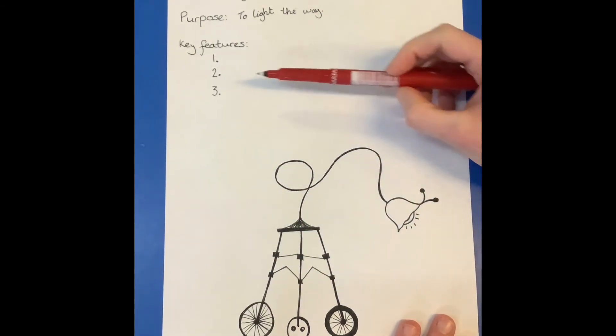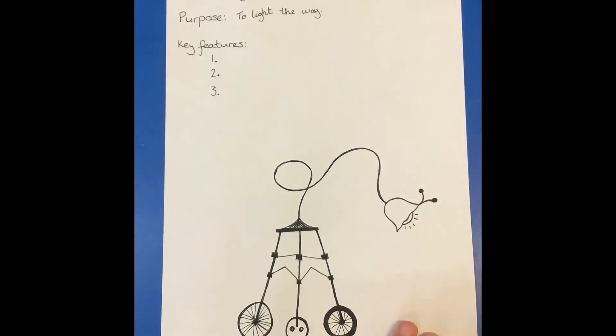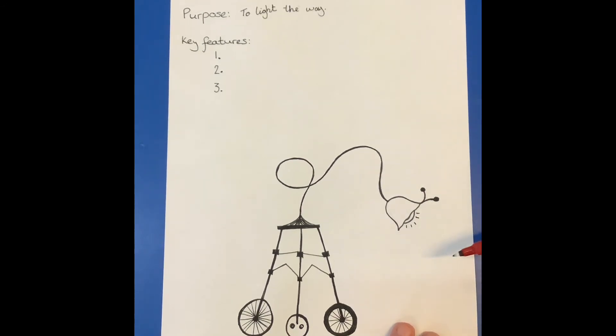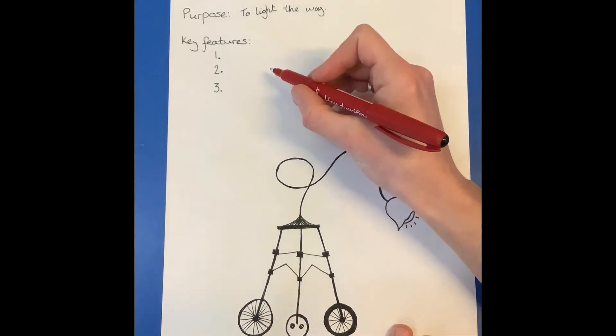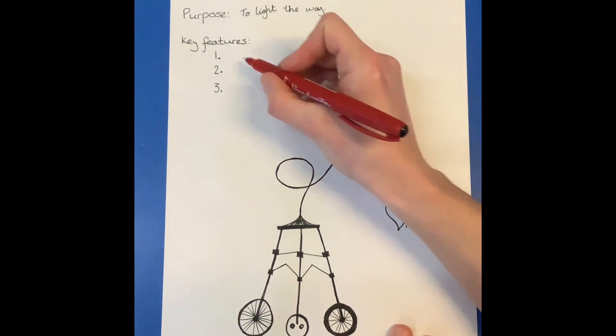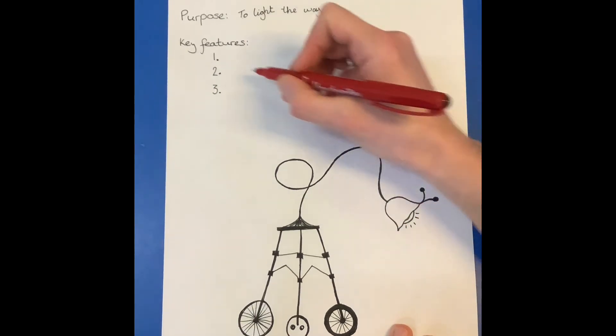And then we're going to have a think. What are three key features of your lost thing? So my lost thing, this one here, it has these wheels at the bottom as feet. So that's a real key feature of it. So I suppose the wheels are to wheel around to different places, to light up different places.